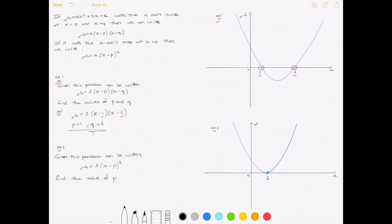Let's look at the second example, where we have the parabola here on the right-hand side, and we're told that this parabola can be written as 3 times x minus p squared, and we're asked to find the value of p.